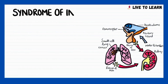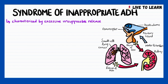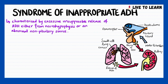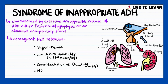In this video, we'll be discussing the Syndrome of Inappropriate Antidiuretic Hormone. It's basically a condition characterized by excessive, unsuppressible release of ADH, either from the neurohypophysis or from an abnormal, non-pituitary source. It results in water retention and consequent hyponatremia, low serum osmolality of less than 280 mOsmol per kg, and concentrated urine production with an osmolality of more than 300 mOsmol per kg. There is no sign of edema or dehydration.